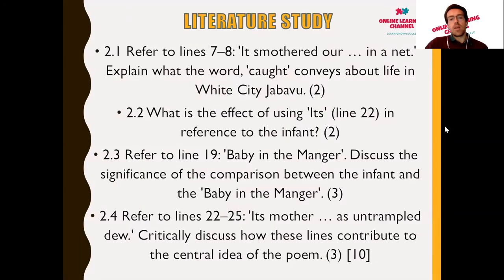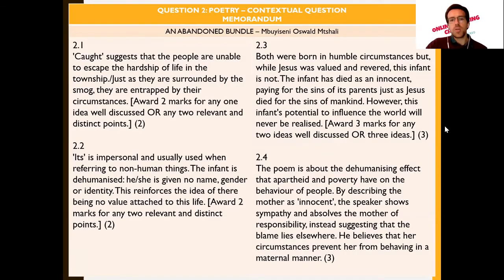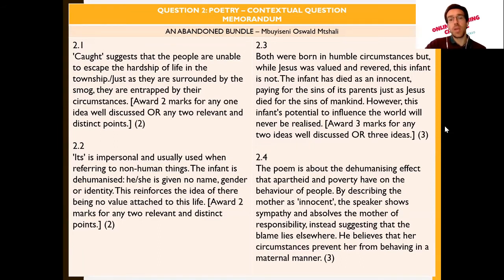Question 2.3 refers to line 19 — 'baby in the manger' — and asks you to discuss the significance of the comparison between the infant and the baby in the manger. This is worth three marks, requiring more detail. Both were born in humble circumstances, but while Jesus — the baby in the manger — was valued and revered, this infant is not. The infant has died as an innocent paying for the sins of its parents, just as Jesus died for the sins of mankind. However, this infant's potential to influence the world will never be realized due to the harsh circumstances.